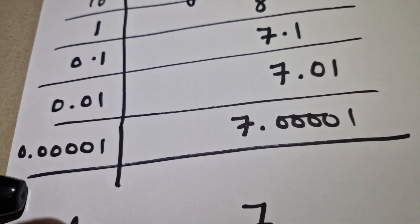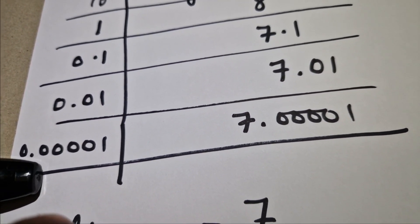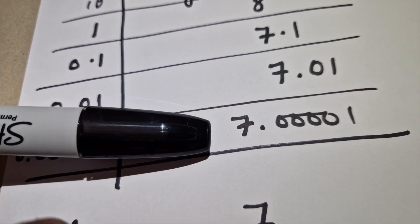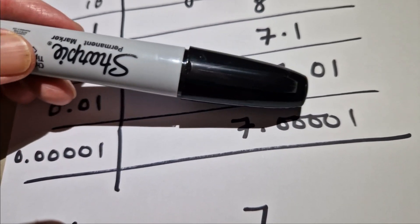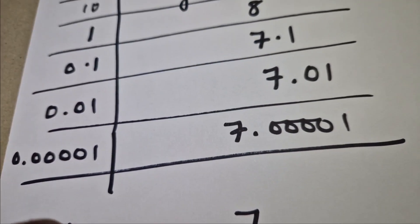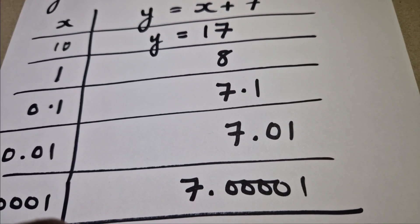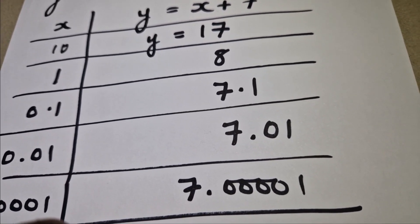And if we make x super small, so 0.001, then you can see I get a value of 7.001. So we've done a few values and you could do a few more if you wanted to use Excel or even just with your calculator, it's very quick.